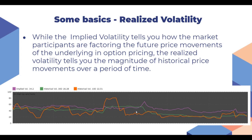We can see that the realized volatility for both 10 days and 30 days has been under the implied volatility over this period shown on the chart.